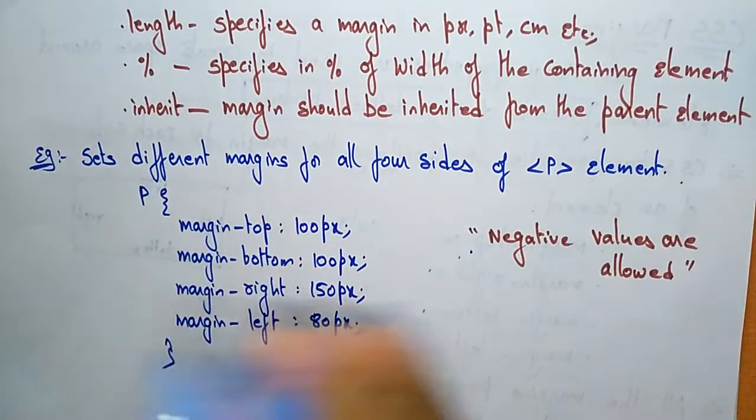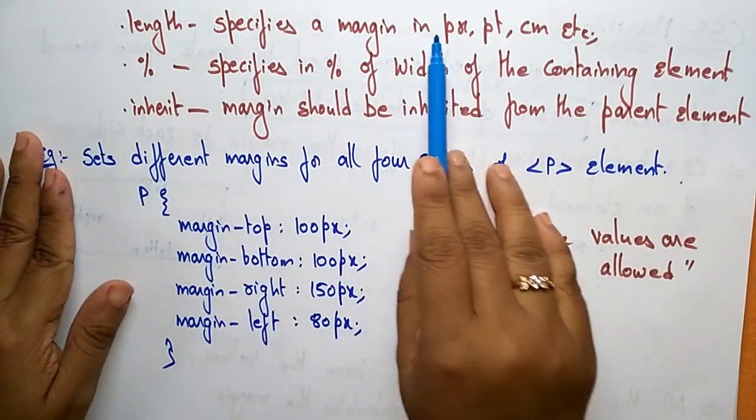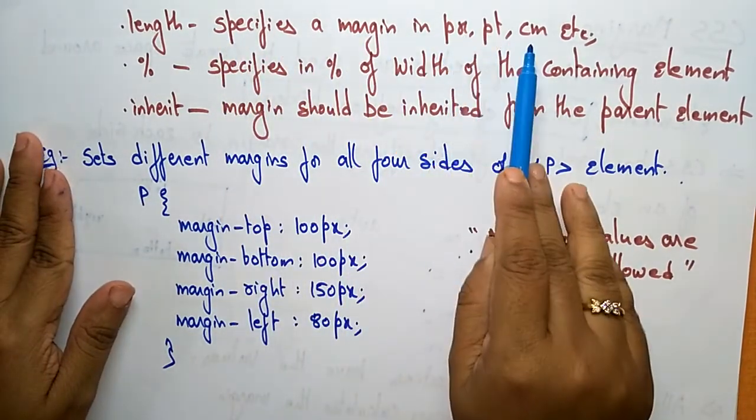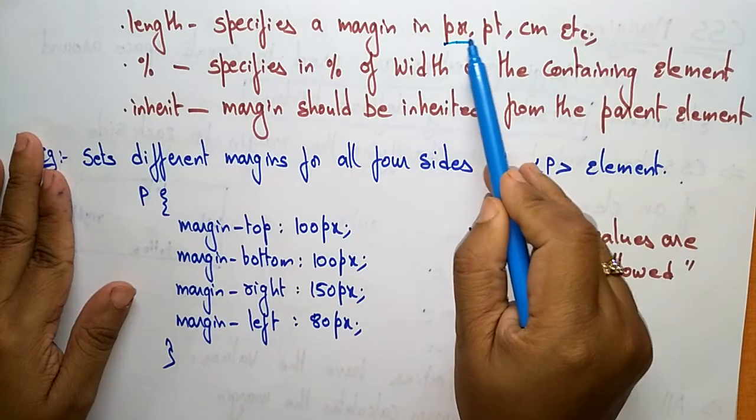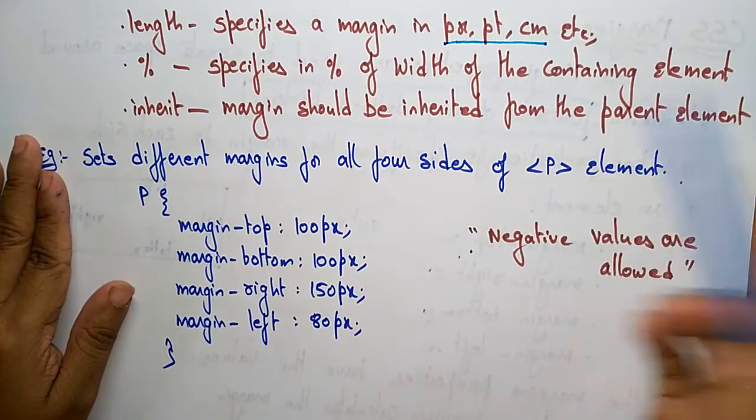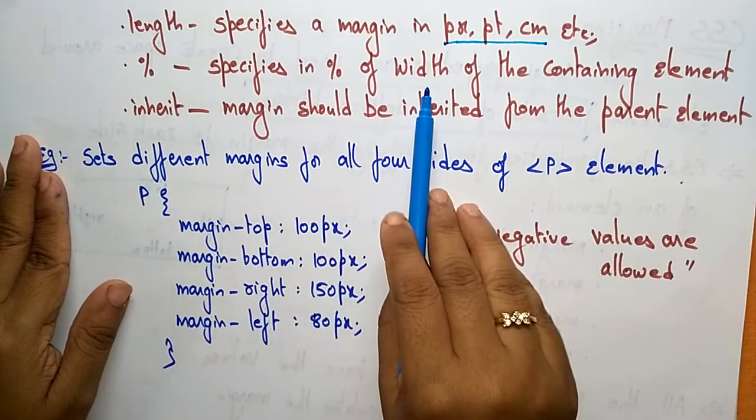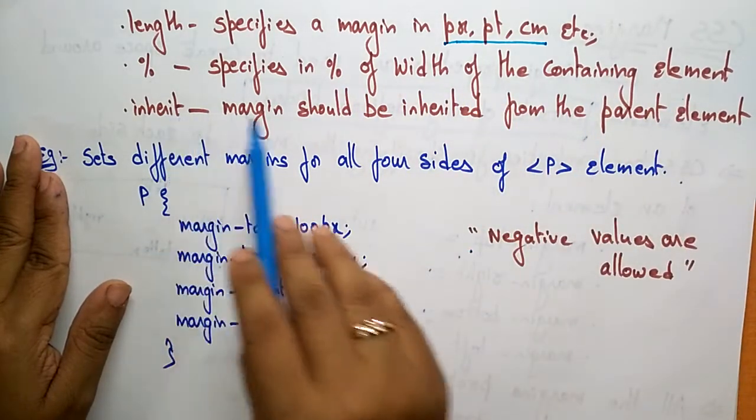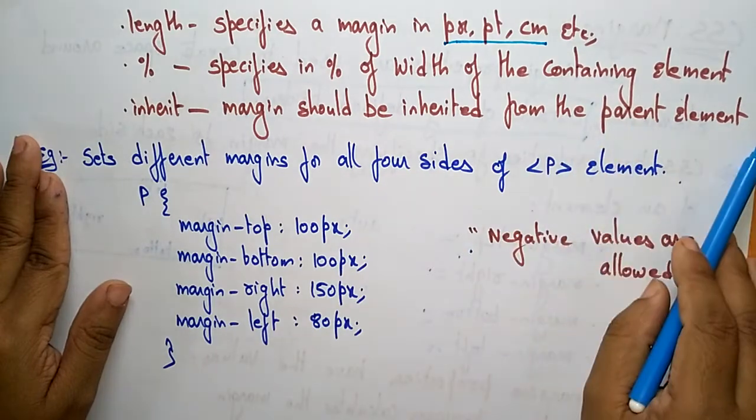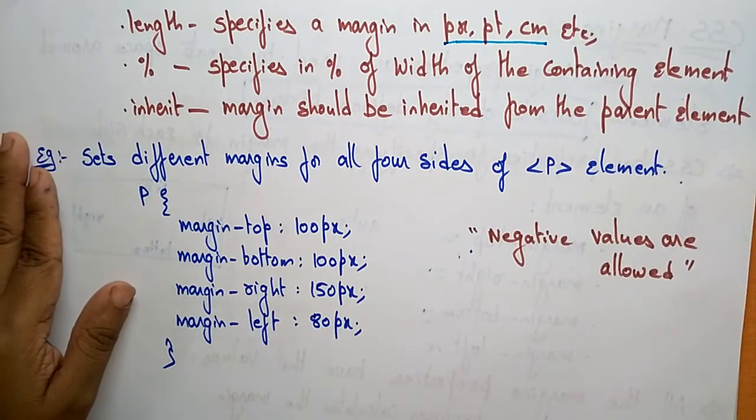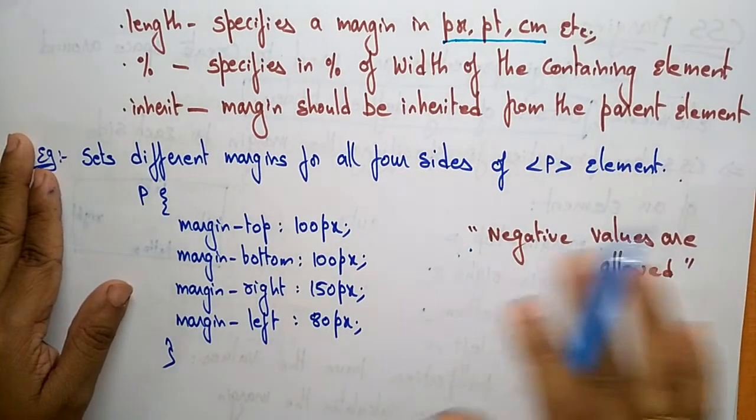Length means margin-left equals length - it specifies the margin in pixels (px), points (pt), or centimeters (cm). I'll explain these length units in coming videos. Percentage specifies as a percentage of width of the containing element. Inherit means margin should be inherited from the parent element. These are the different values you can use in the properties.